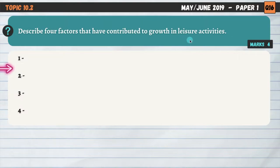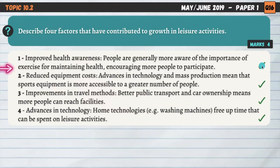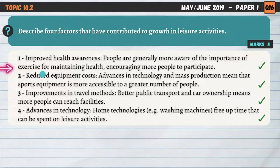The leisure industry has grown enormously in recent years, and there are a number of factors that have contributed to this growth — you need to name and describe four of them. Improved health awareness is the first: people are generally more aware of the importance of exercise for maintaining health, encouraging more people to participate. As our awareness of exercise's importance has increased, more people are getting involved for that reason.